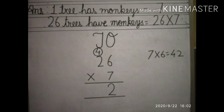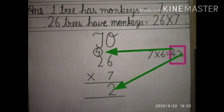Students, when we look at 42, we come to know that 2 is at the 1's place and 4 is at the 10's place. So 2 will come to the 1's place and 4 will go as carryover to the 10's place.